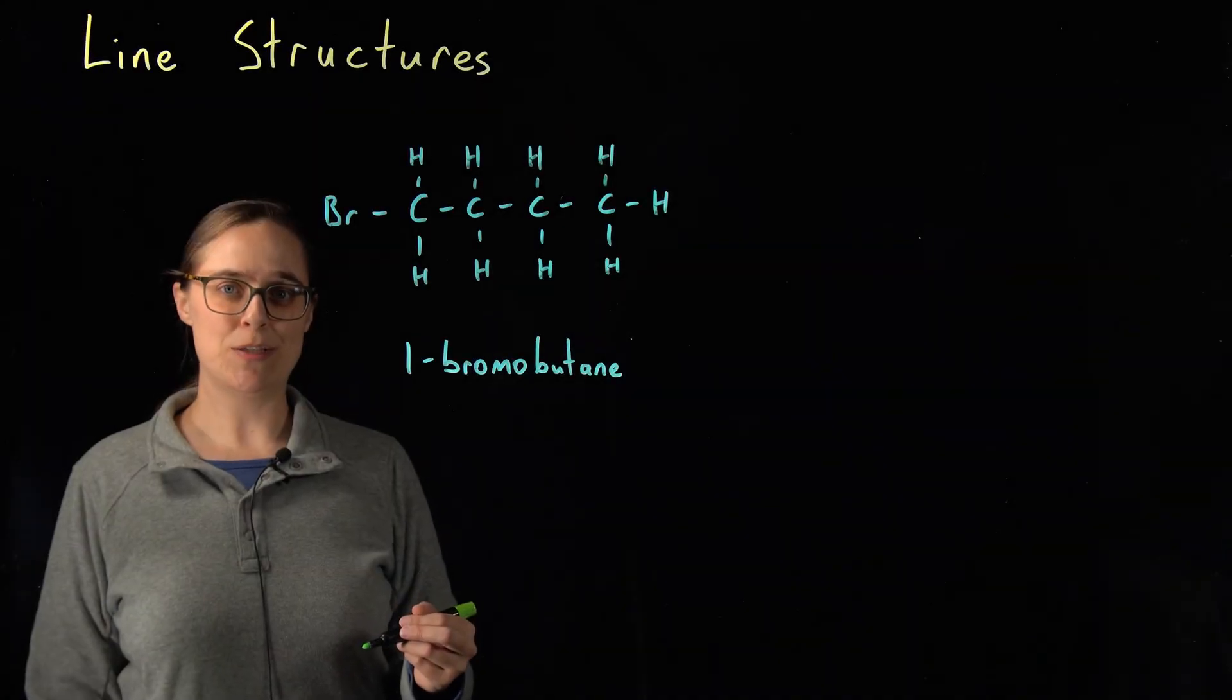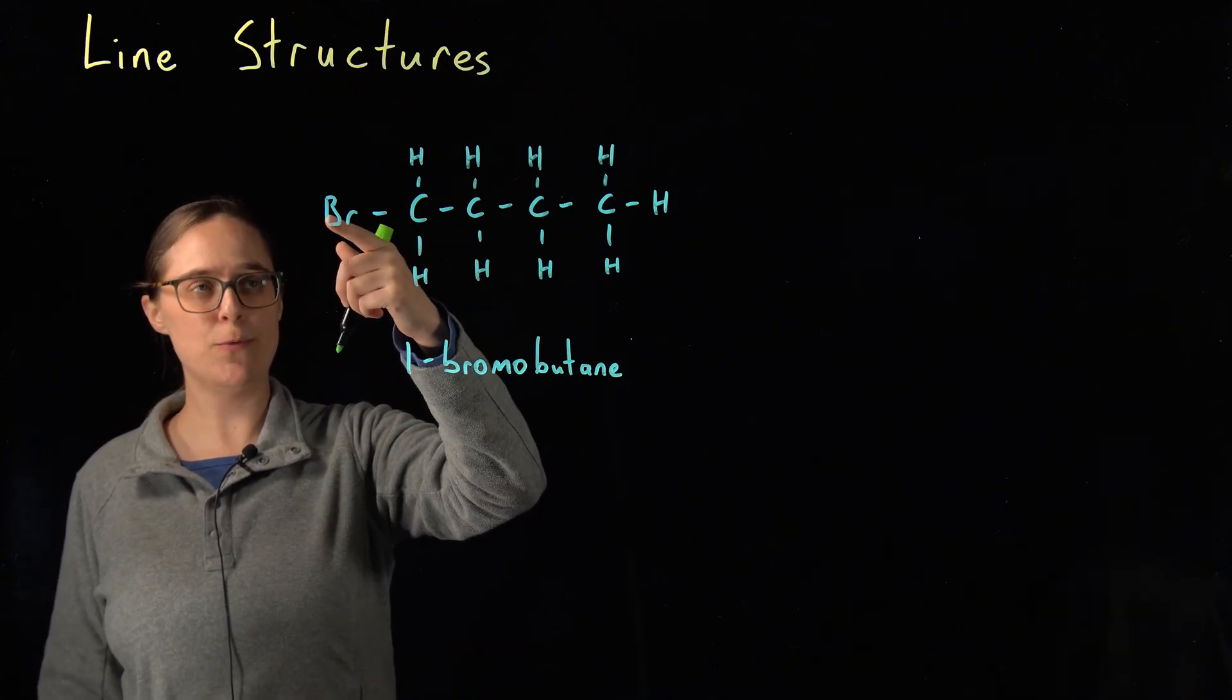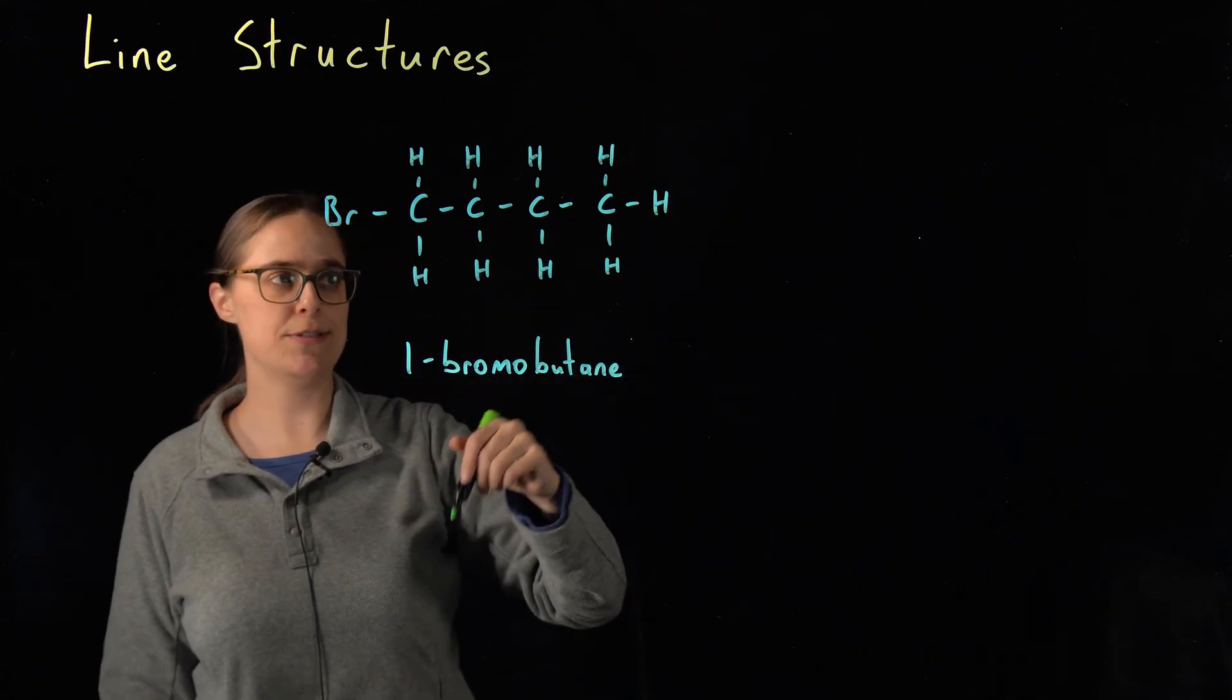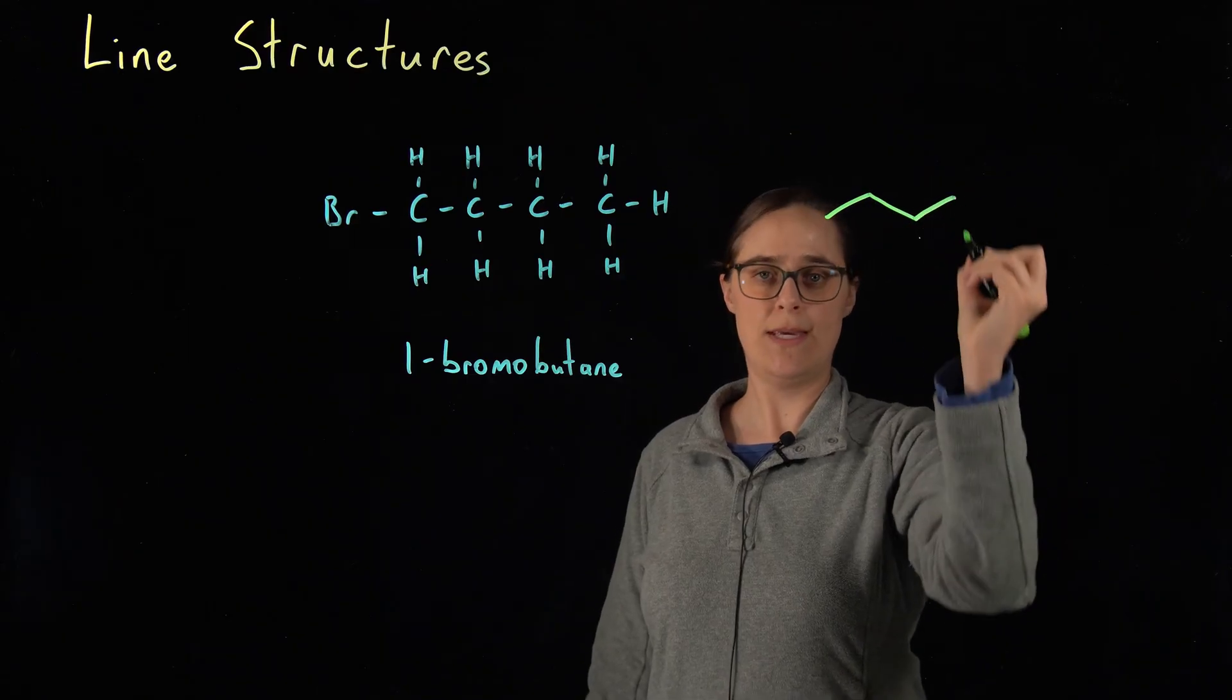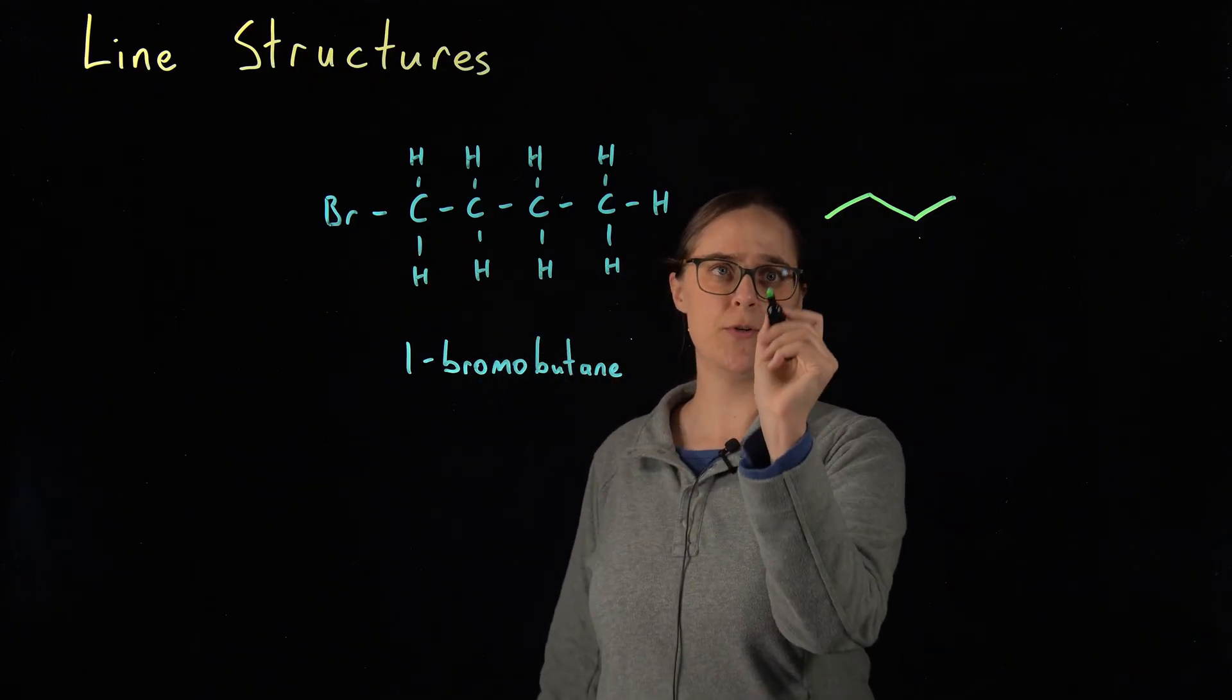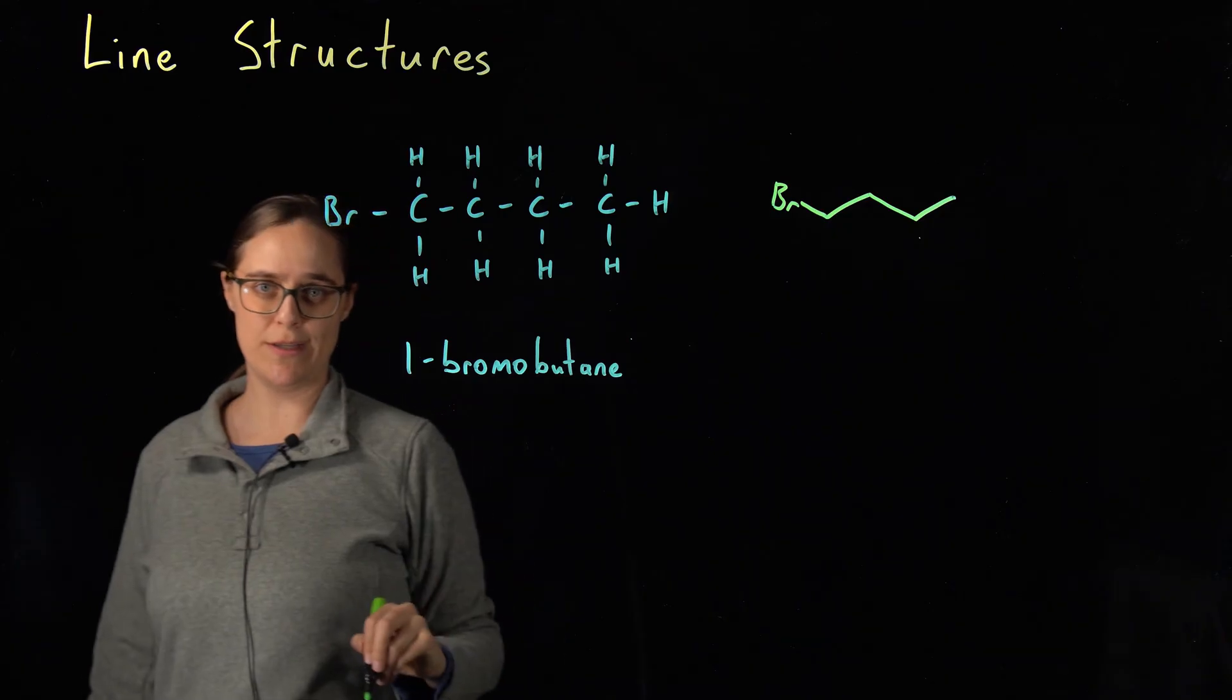Let's do some practice problems, converting between Lewis structures and line structures. So this is a molecule called 1-bromobutane. So we need to draw those four carbons in a chain in line structure format. And remember that elements other than carbons and hydrogens, we need to actually show their symbol. So this is the line structure for the same molecule.